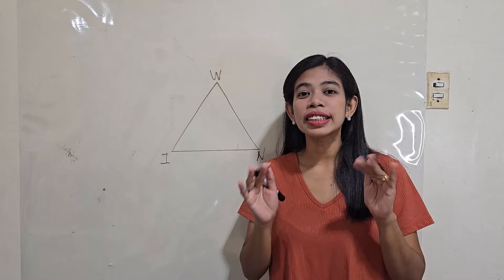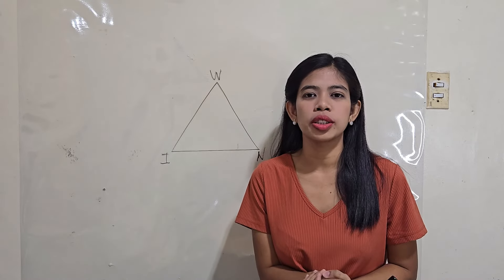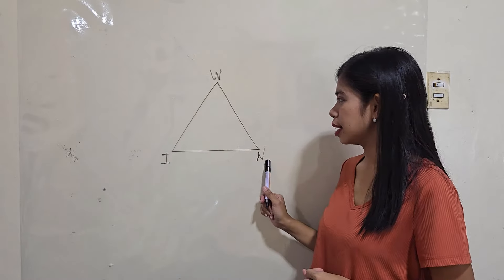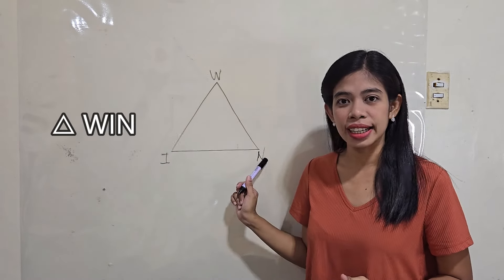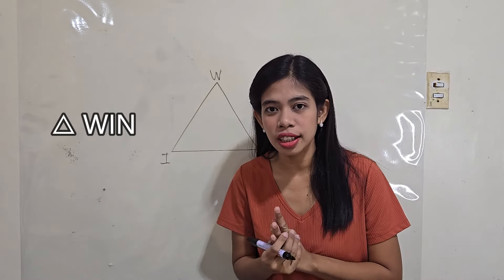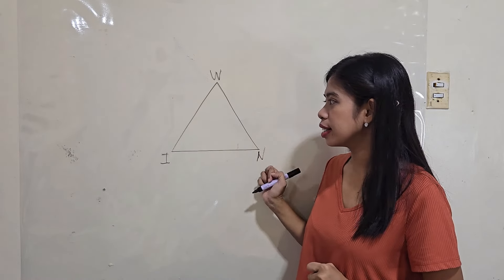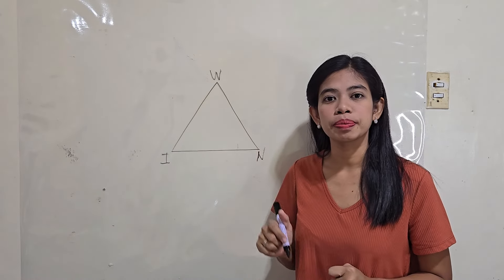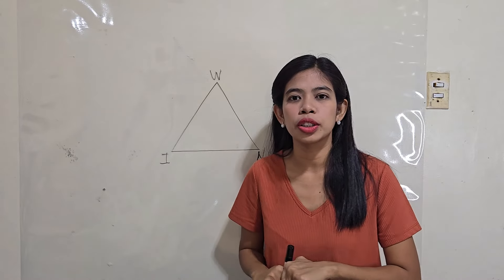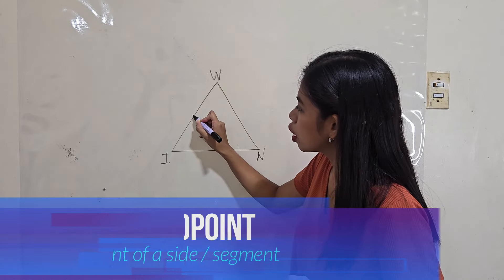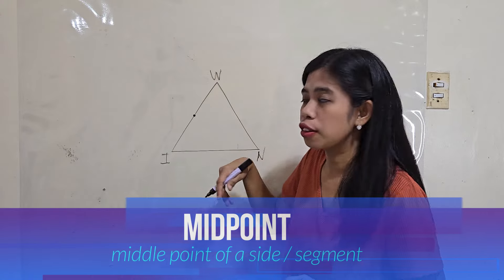So, before we define what is midline, what is a midpoint first? Suppose we are given triangle WIN, so we have three sides of a triangle: side WI, side IM, and side WN. Which are the midpoints? Your midpoint is exactly the middle point of a side or of a segment.